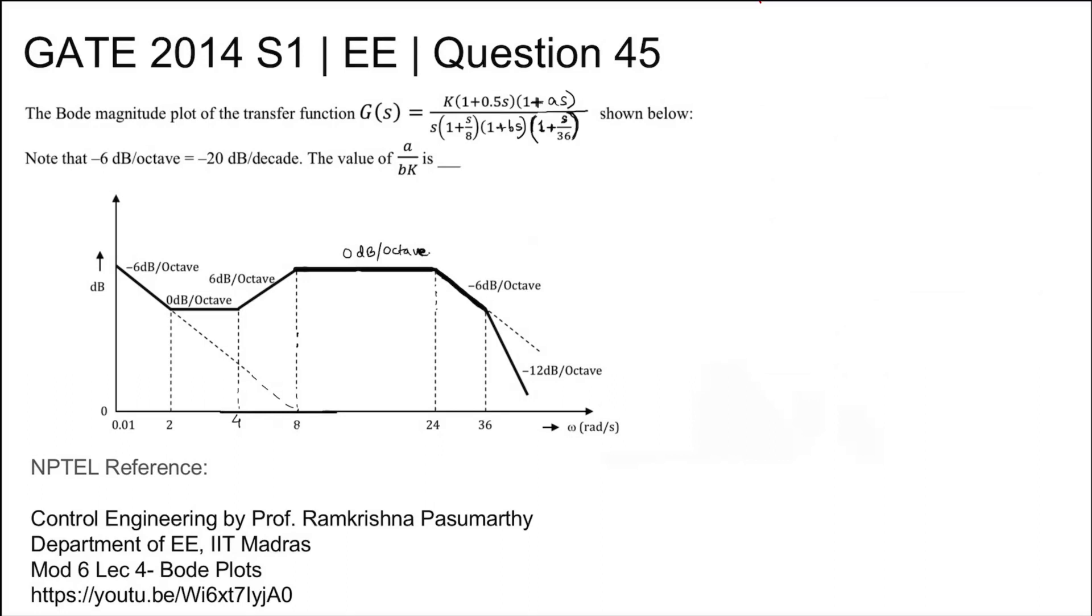This is GATE 2014 Set 1 Electrical question number 45. The magnitude Bode plot of the transfer function G(s) equals k times (1 plus 0.5s) times (1 plus as) divided by s times (1 plus s by 8) times (1 plus bs) times (1 plus s by 36) is shown below.